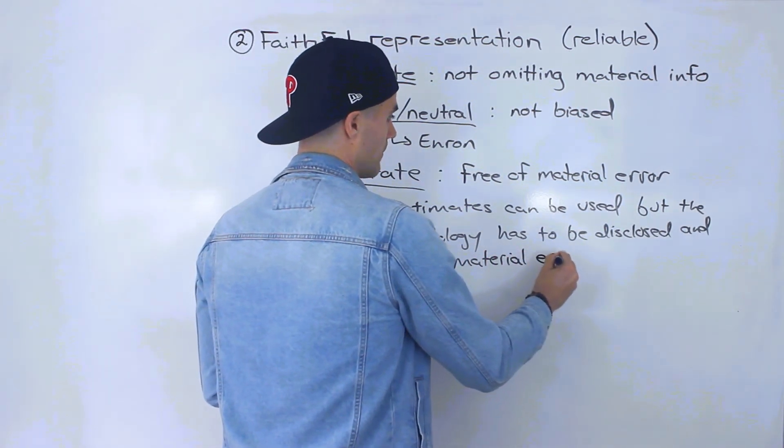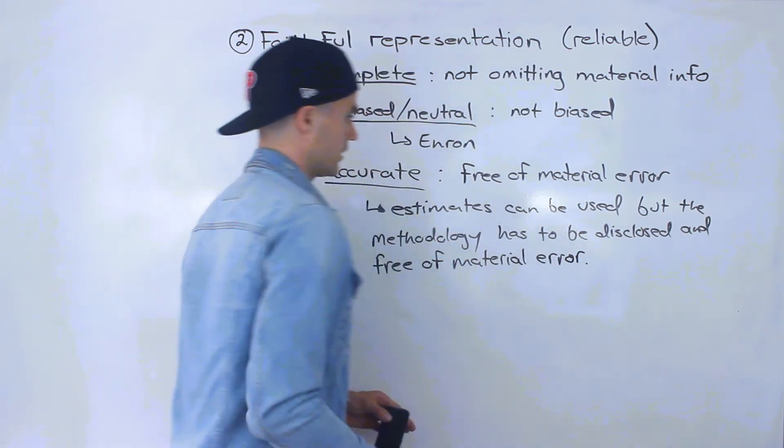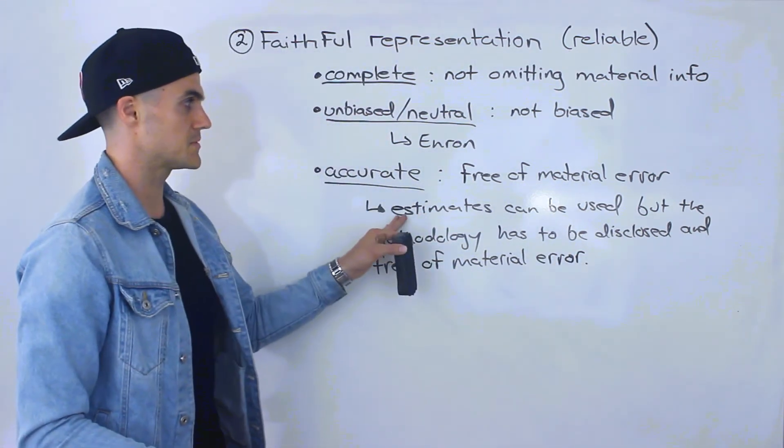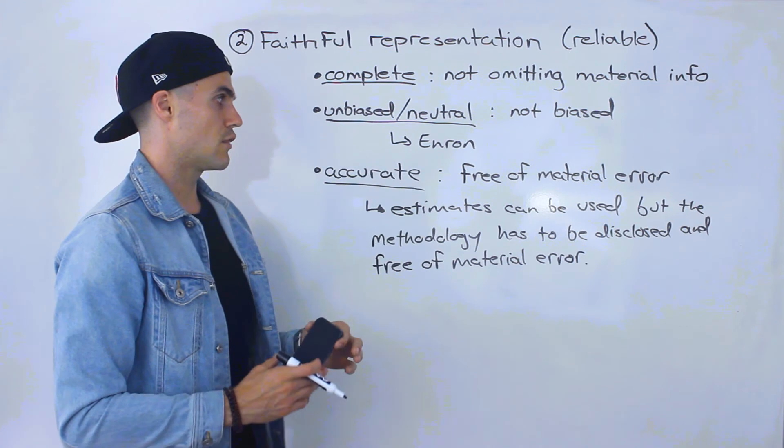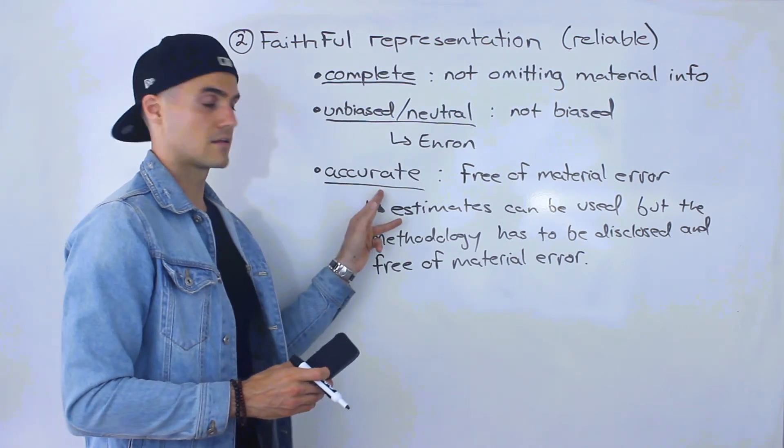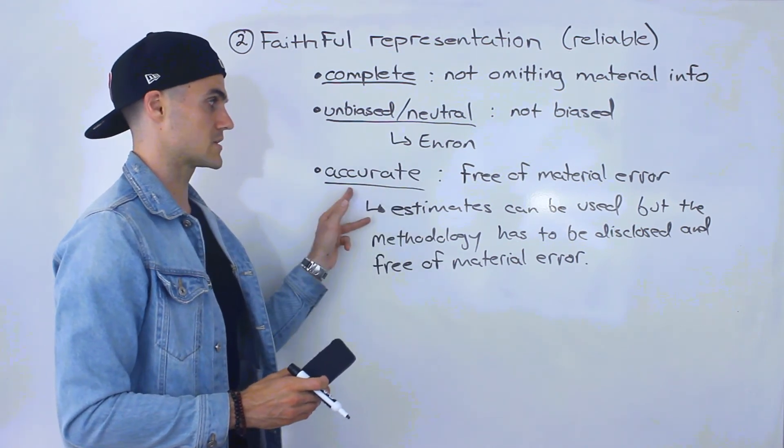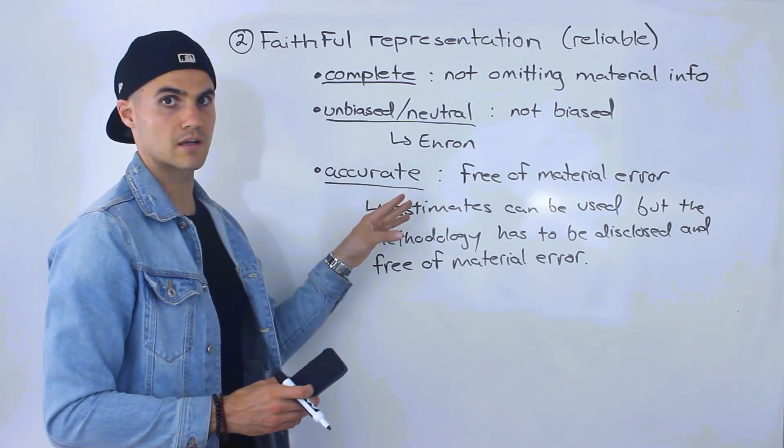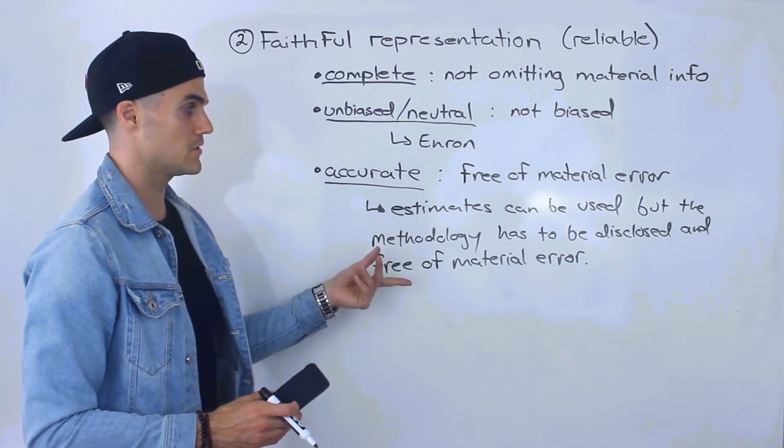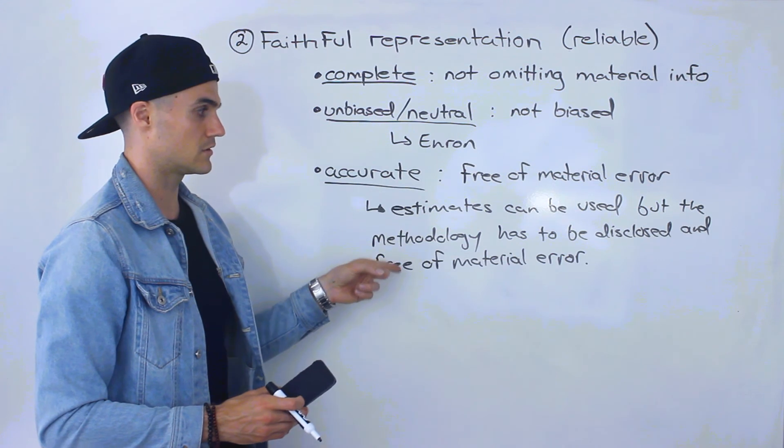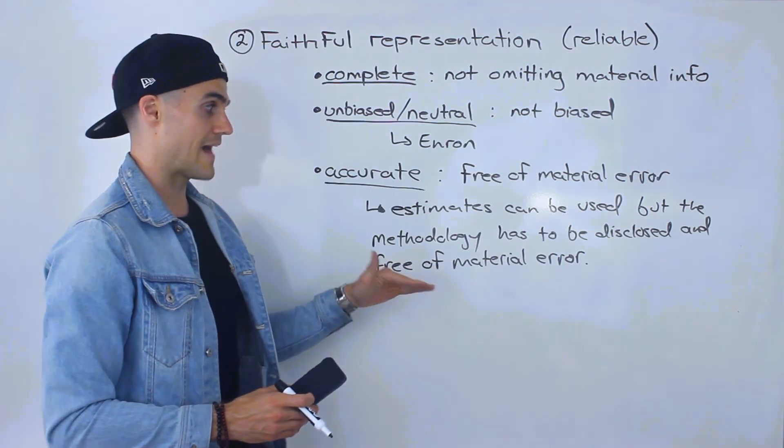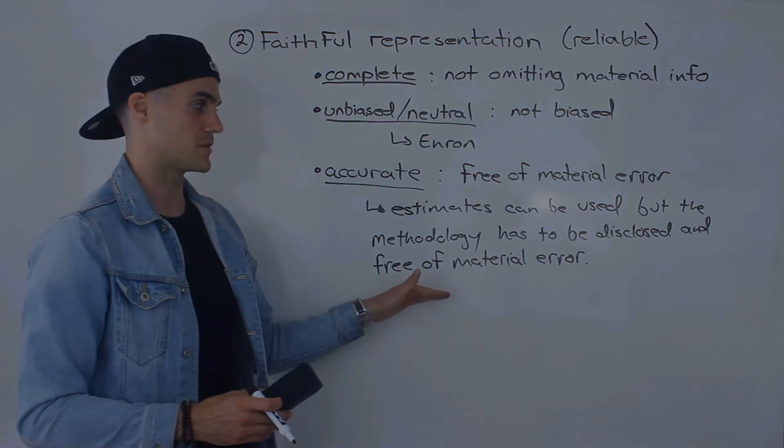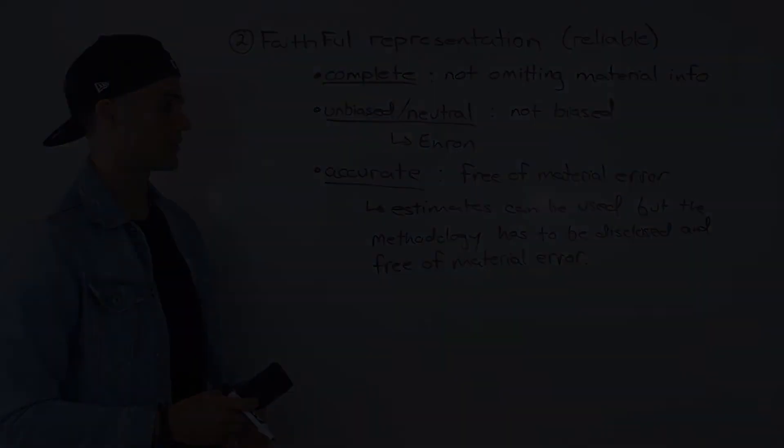So I want to make a point on that. So just because estimates are used, it doesn't mean that it's violating this characteristic, this sub-characteristic of information having to be accurate. Estimates can be used, but the methodology has to be disclosed. And that methodology that you use has to be free of material error.